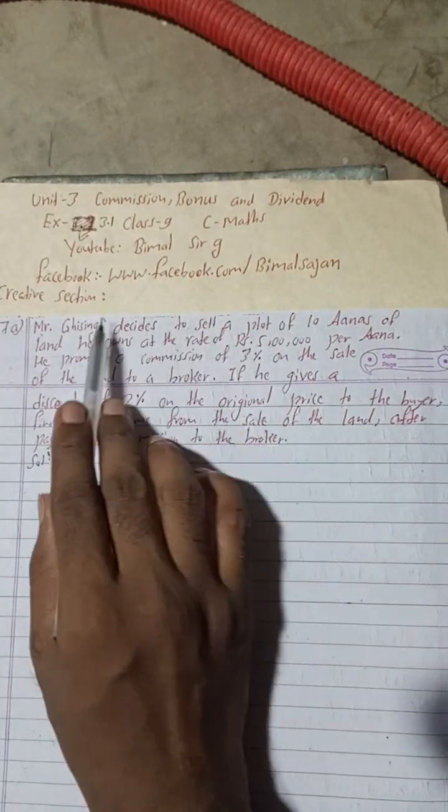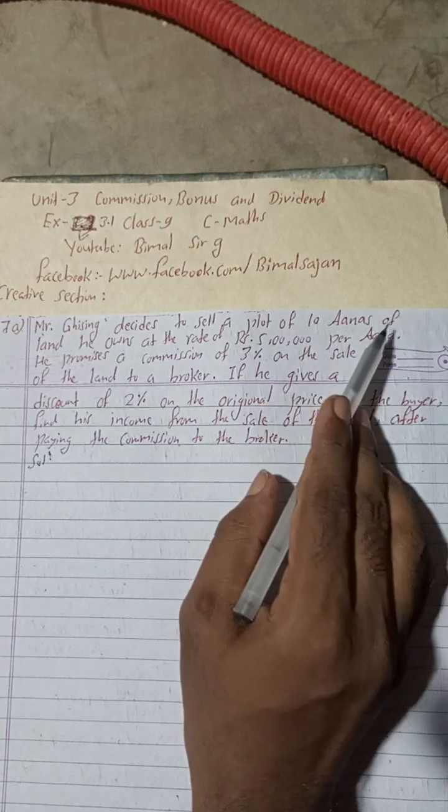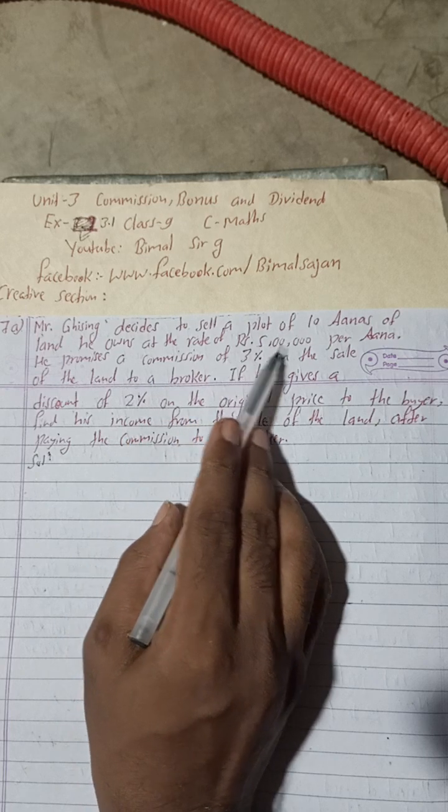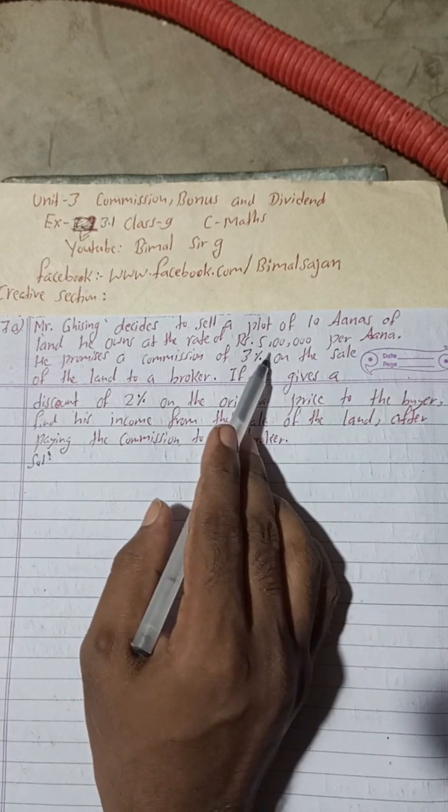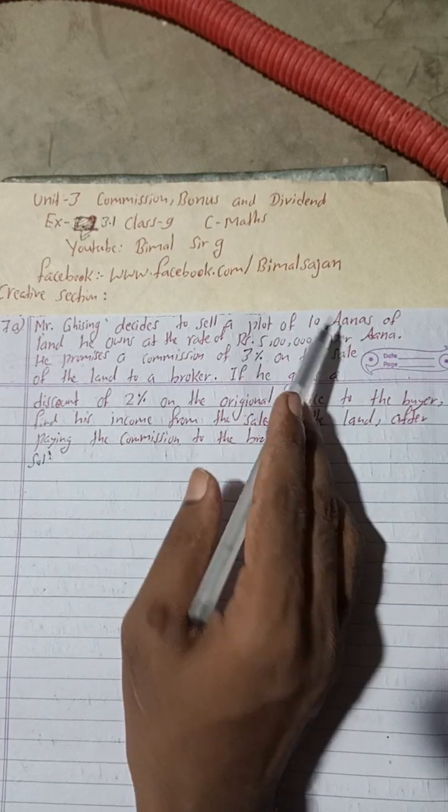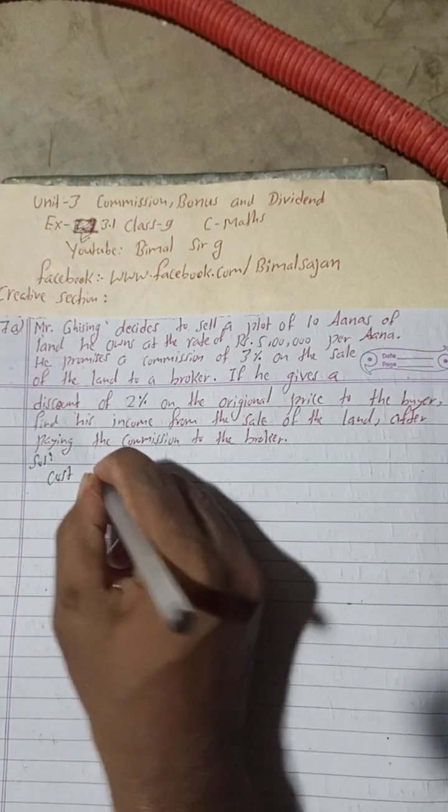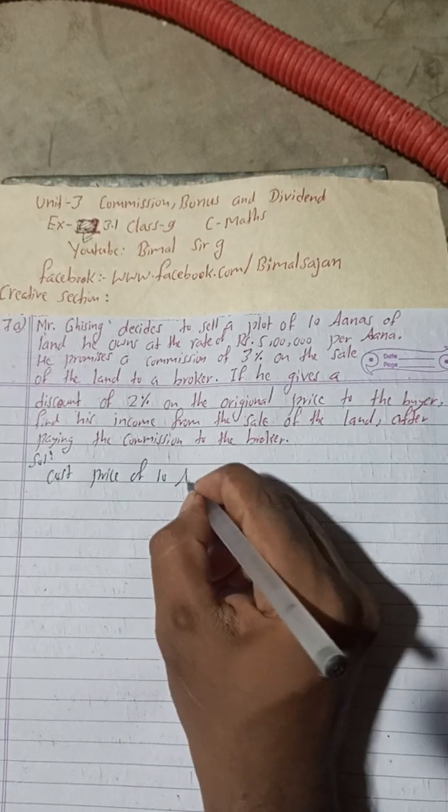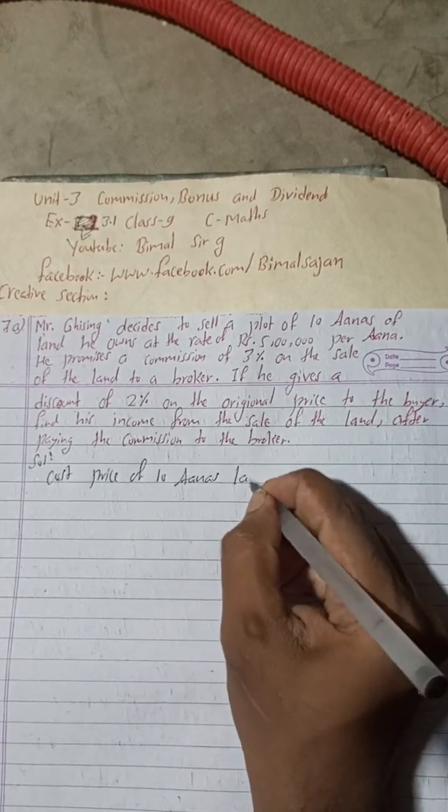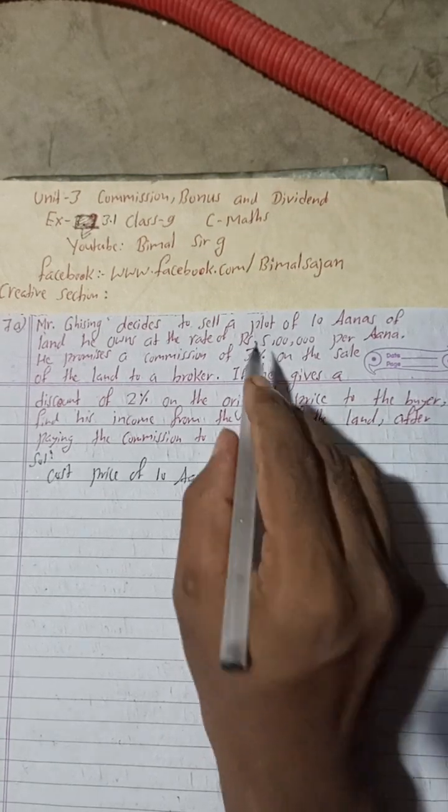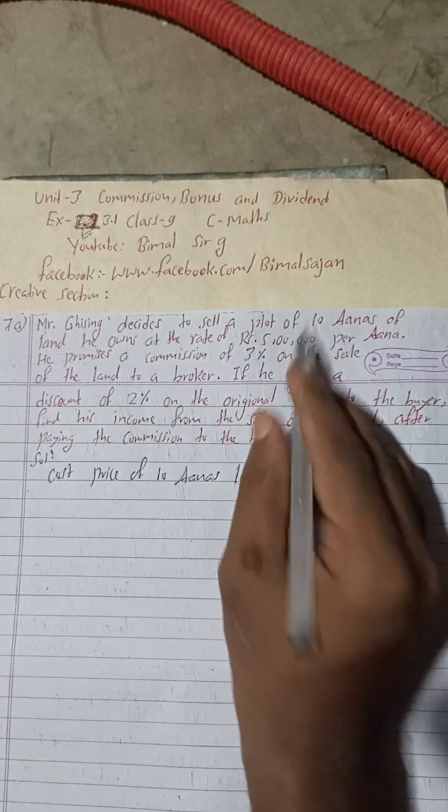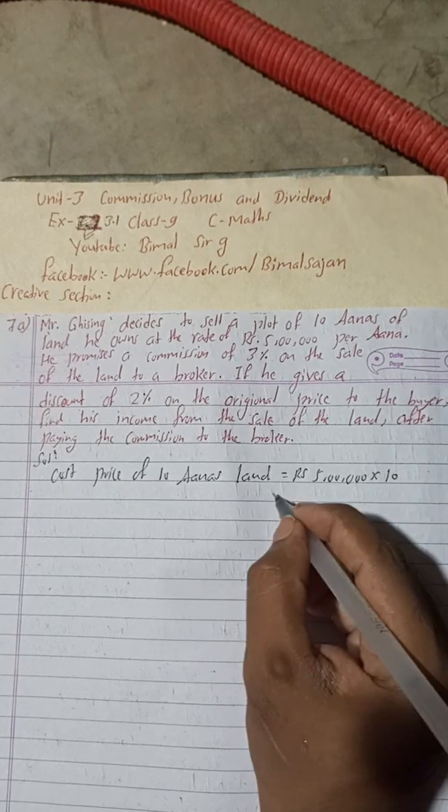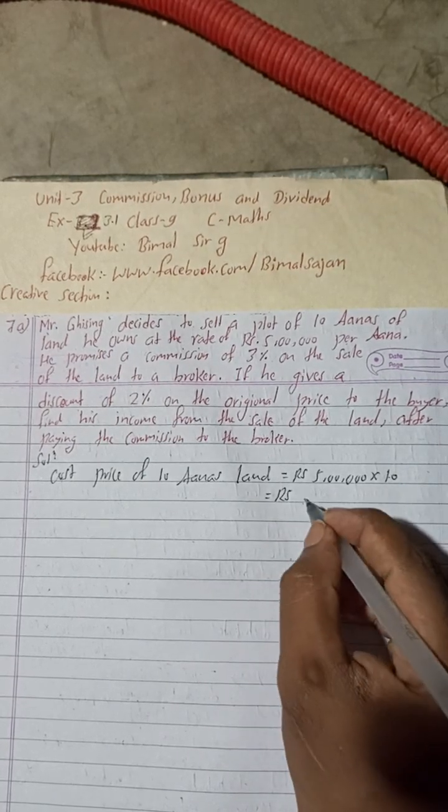Now here, he decides to sell a plot of 10 anas of land he owns at the rate of Rs 5 lakhs per ana. So cost price of 10 anas land is equal to Rs, for one ana per ana is this much 5 lakhs, so into 10. 5 lakhs into 10.